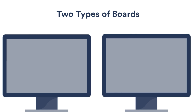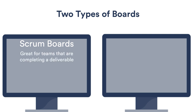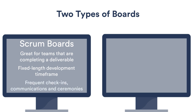The first type of board is a Scrum board. Scrum boards are an excellent way for a software development team to get started, but it's not just for software teams. Scrum excels as a methodology for any team that has a deliverable to ship. The structure of Scrum — fixed-length development timeframes, frequent check-ins, team communication, and ceremonies like the end-of-sprint retrospective — all contribute to stakeholders knowing how the project is going and to the team continually improving their development process.